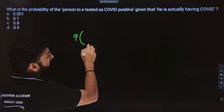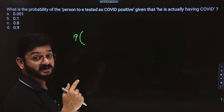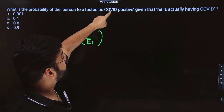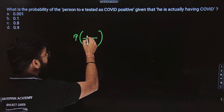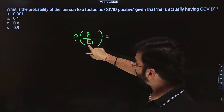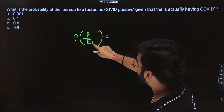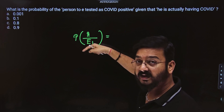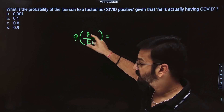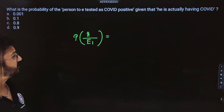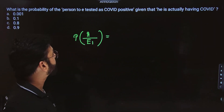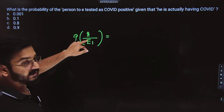We need to find P(A|E1) — given that he's actually having COVID, which is E1, and tested positive, which is A. First, you see the condition: the person is actually having COVID, and we are doing the test and he is getting tested COVID positive. If you see the percentage value and read the question, it is clearly written that 90% of people are tested COVID positive and 10% go undetected.